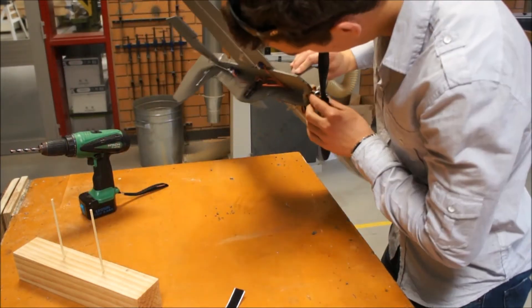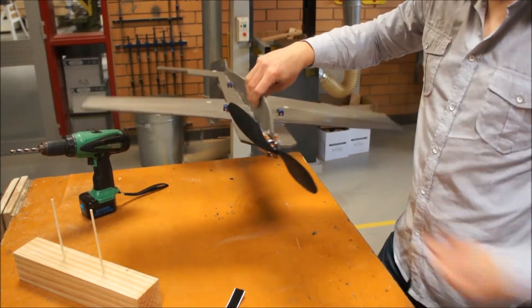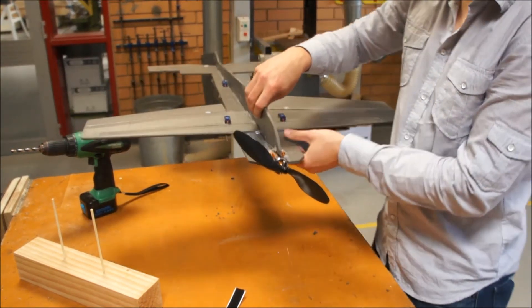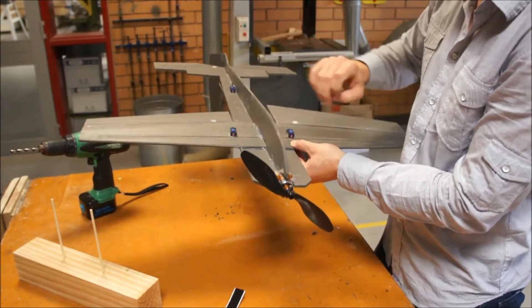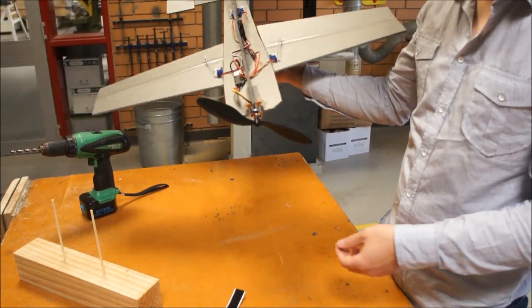Now that we've got our motor connected so that we've got the full weight, you need to have the motor, the prop, everything that's going on the plane. We need to have it all on, all loaded up fully so that we can get the center of gravity right.